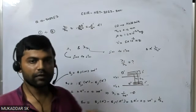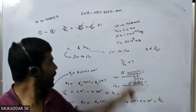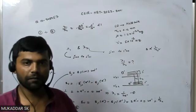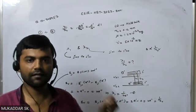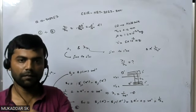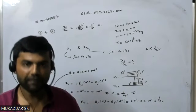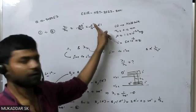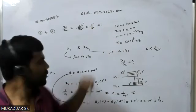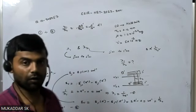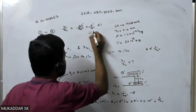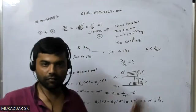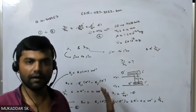So B'' will be a little bit greater than B'. For example, if B'' is 5 cm⁻¹, then B' might be 4.5 cm⁻¹. This means the ratio is of course smaller than 1, but not by much — it will be like 0.99 something. So option A will be correct. We discussed this type of concept in the class itself. Thank you.